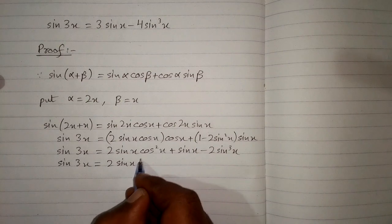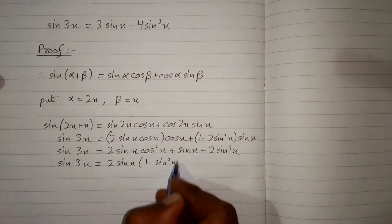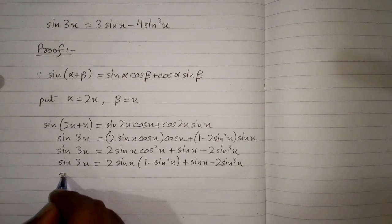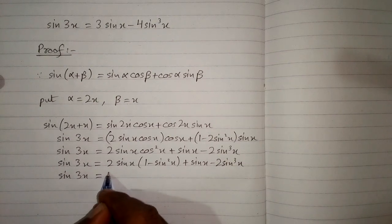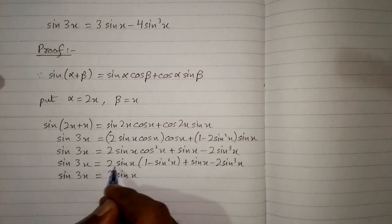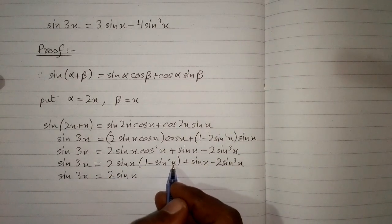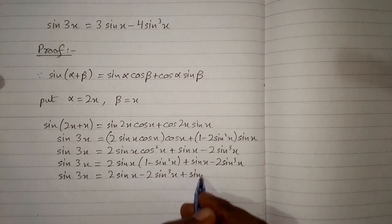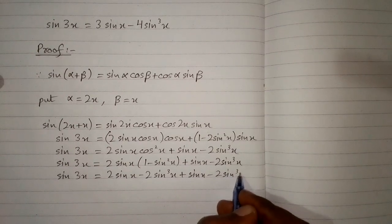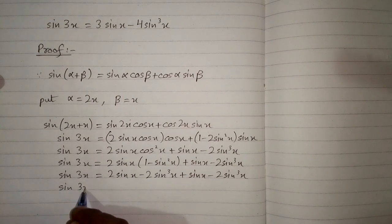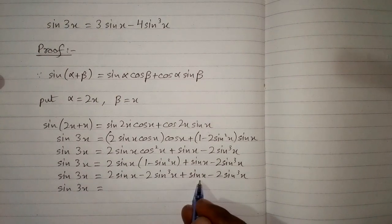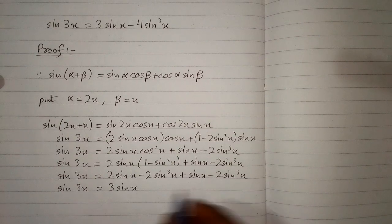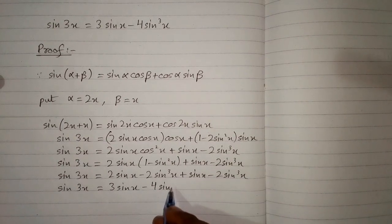Now cos square x is equal to 1 minus sin square x. So sine 3x is equal to 2 sine x multiplied by 1 is 2 sine x, and 2 sine x multiplied by minus sin square x is minus 2 sine cube x. Therefore sine 3x is equal to 2 sine x plus sine x, which is 3 sine x, minus 4 sine cube x. And this is the required identity.